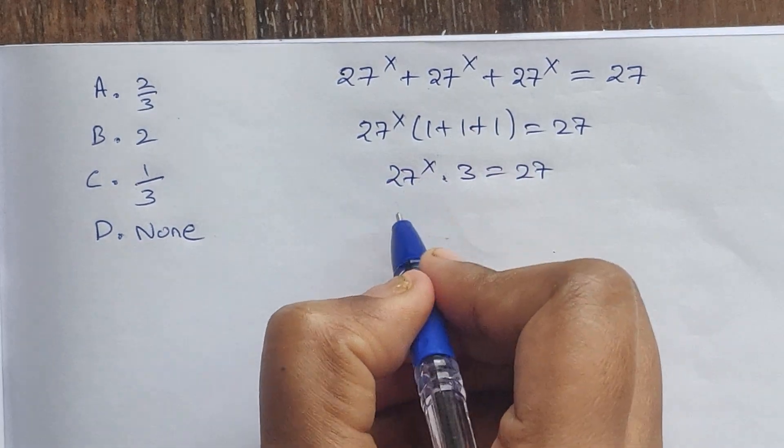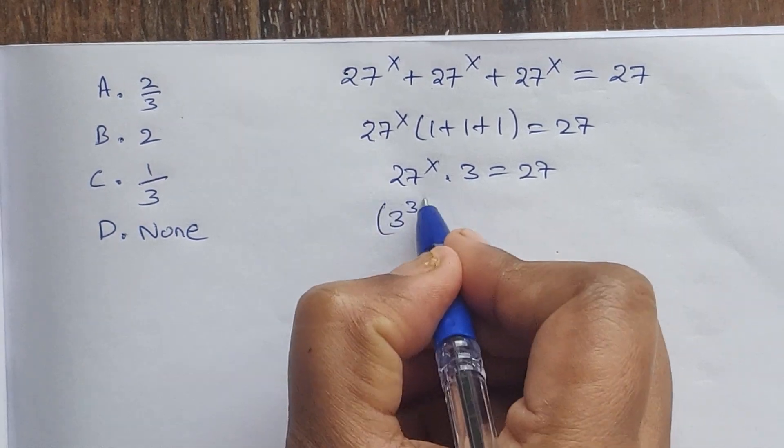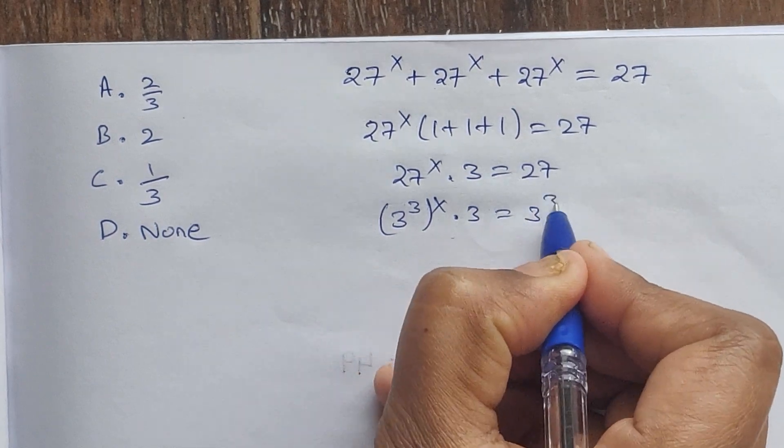Now we can write 27 as 3^3. So (3^3)^x times 3 equals 3^3.